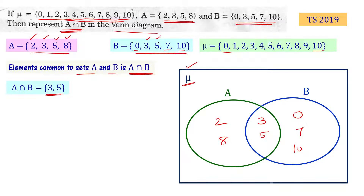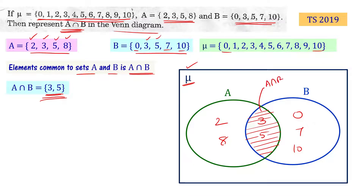Now A intersection B in the Venn diagram: A intersection B contains elements 3 and 5. Let's shade that portion. This represents the A intersection B set.